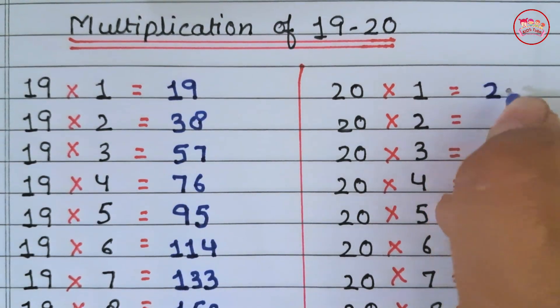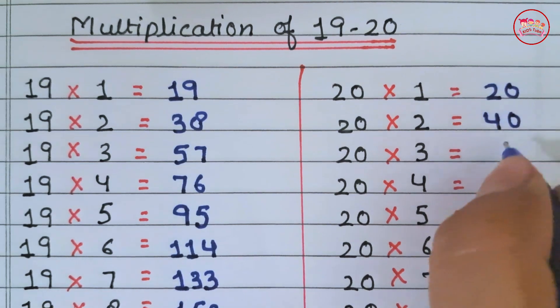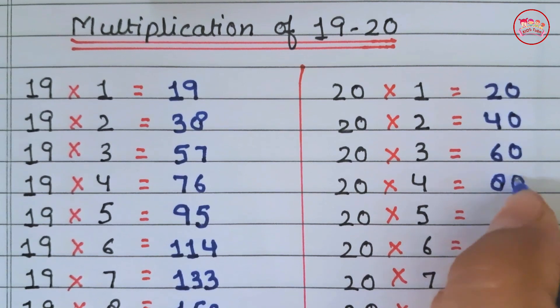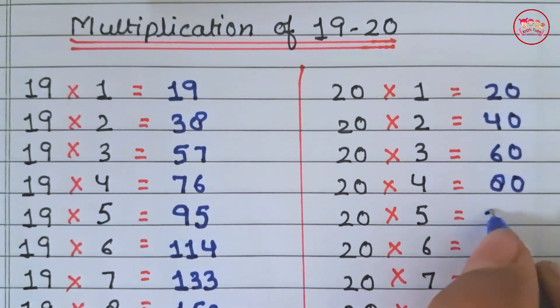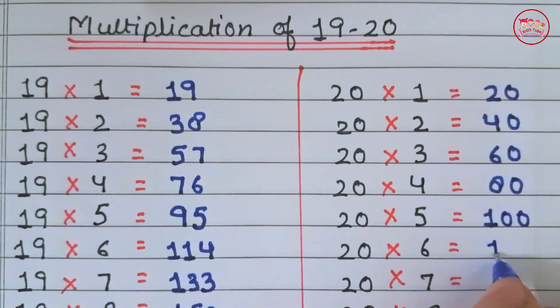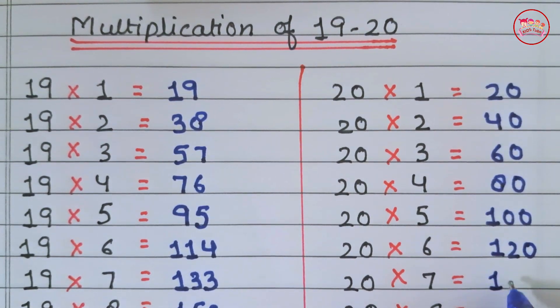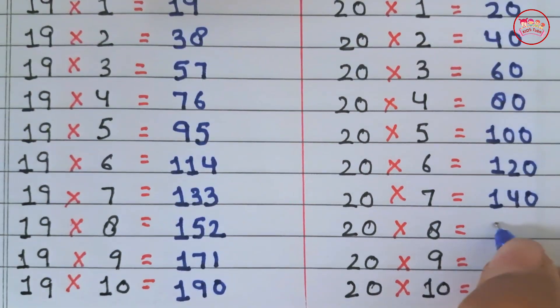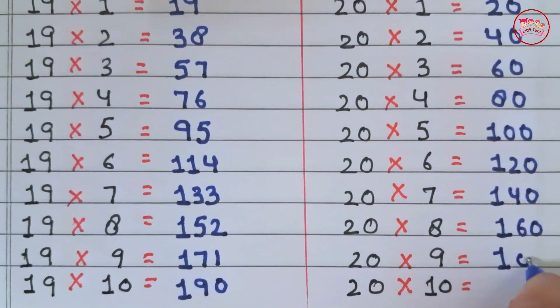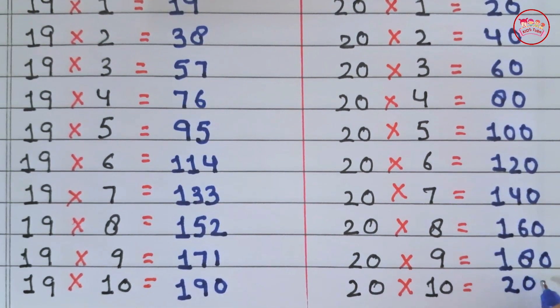20×1 is 20, 20×2 is 40, 20×3 is 60, 20×4 is 80, 20×5 is 100, 20×6 is 120, 20×7 is 140, 20×8 is 160, 20×9 is 180, 20×10 is 200.